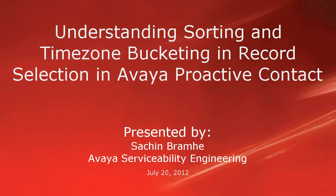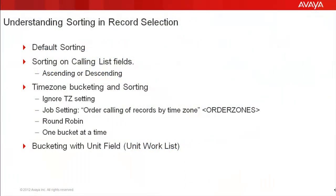Hello and welcome. I'm Sachin Bramhey with Avaya Serviceability Engineering. This video is about understanding sorting and timezone bucketing for record selections in Avaya Proactive Contact. When you create your record selection, you have an option of sorting the records, and based on that, they get called out from the job. Apart from the sorting, the timezone buckets also come into play where you have more than one timezone that you are dialing into. In this video, we will see how the sort function and the timezone buckets work together.